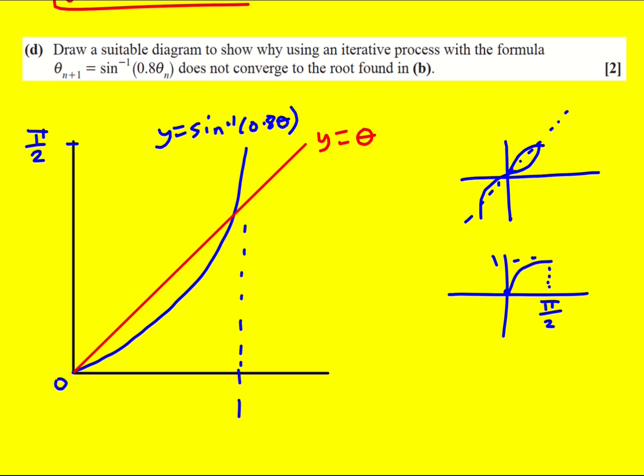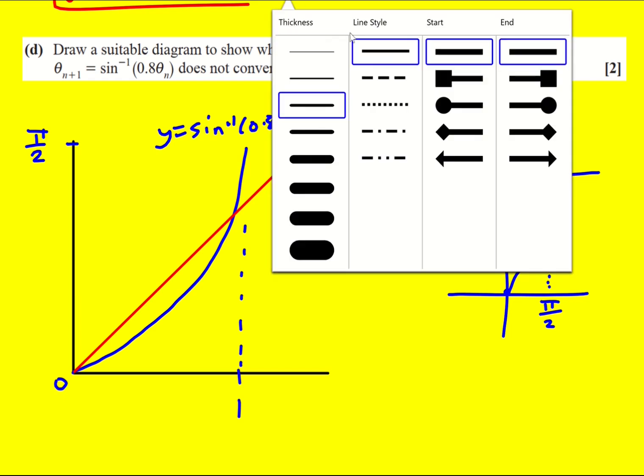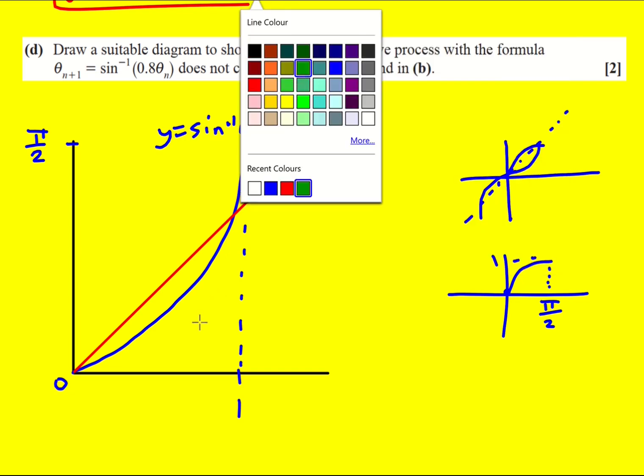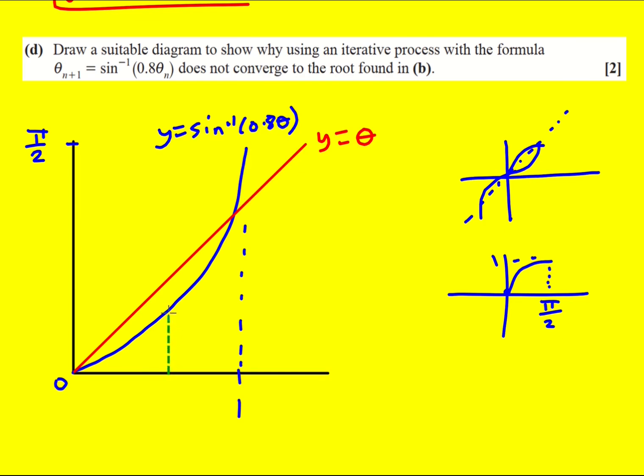So what happens when we put in 0.5, for example, or some other value? I forgot about the dashed line. Sorry, I should have used that before. I'm going to do it in green now. So I'm going to go up here, but I'm actually going to hit the curve first and I'm going to go that way. And it's going to take me away from the root, which is up here. And what we actually get is something called staircase divergence. It's going to end up going this way. It's going to end up being negative, probably. Or maybe it's going to actually, maybe it gives a solution of 0.